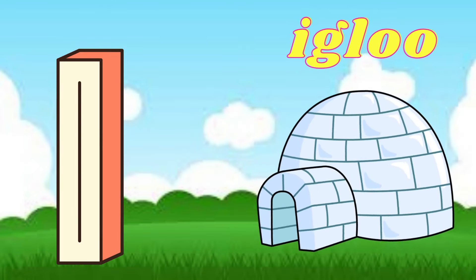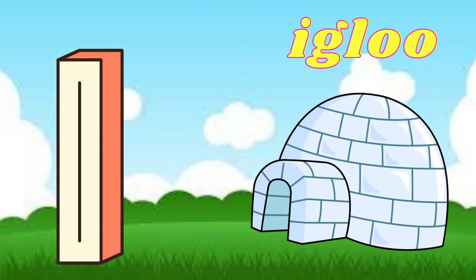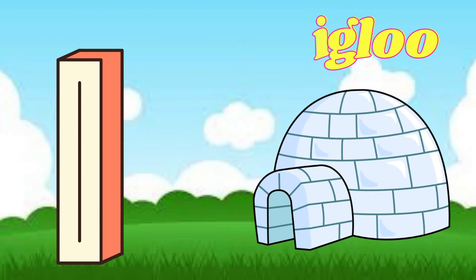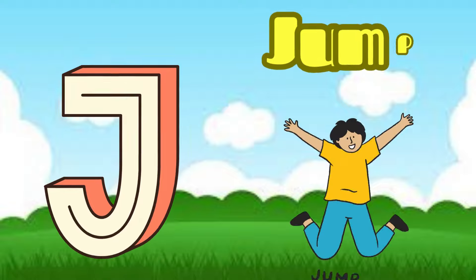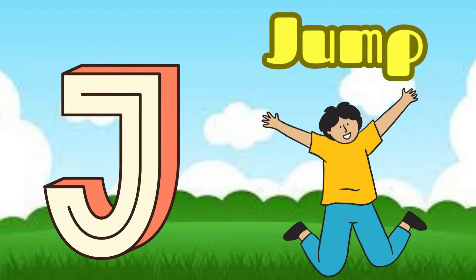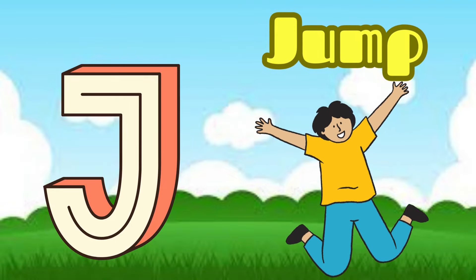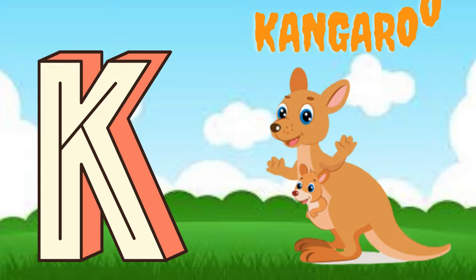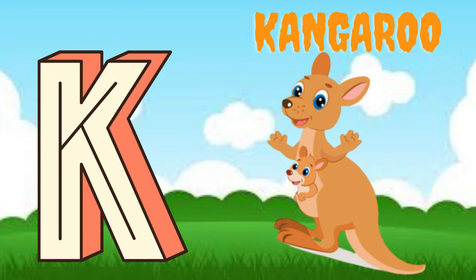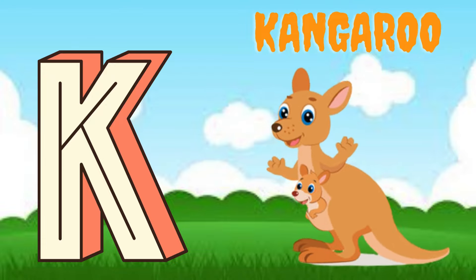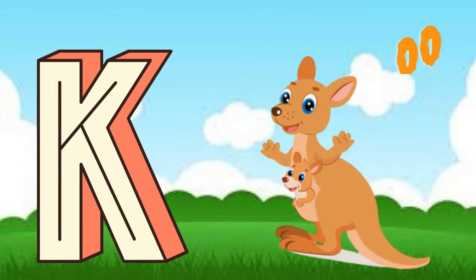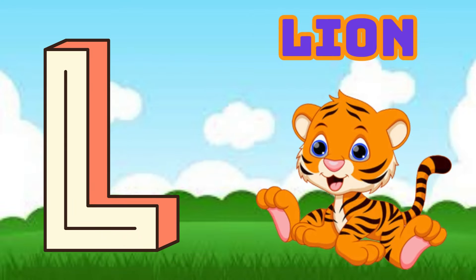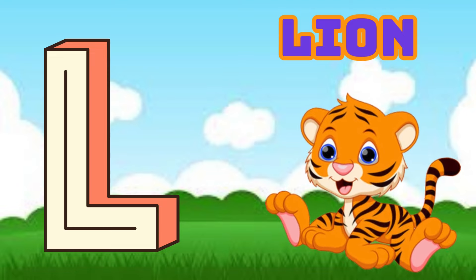I is for Igloo, I-I-Igloo. J is for Jump, J-J-Jump. K is for Kangaroo, K-K-Kangaroo. L is for Lion, L-L-Lion.